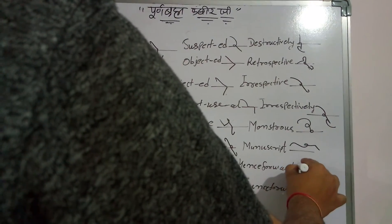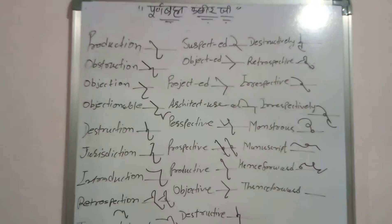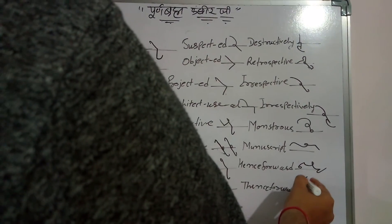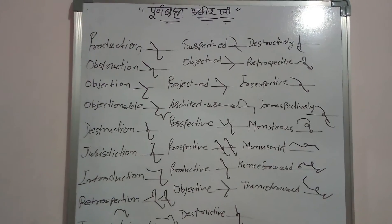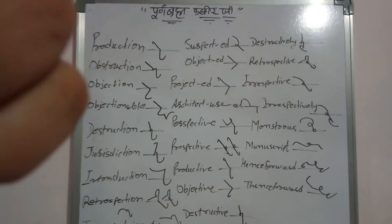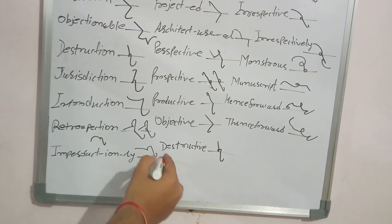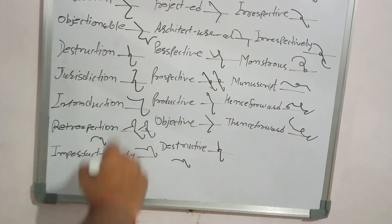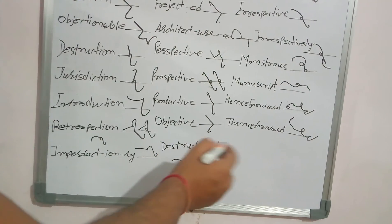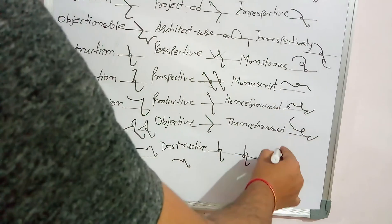Henceforward, henceforward, henceforward. Imperfect, imperfect. Imperfection, imperfectly के लिए एक ही outline बनेगी। Destructive के लिए एक ही — destructive.